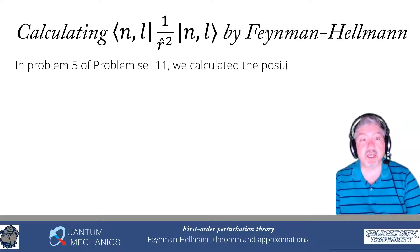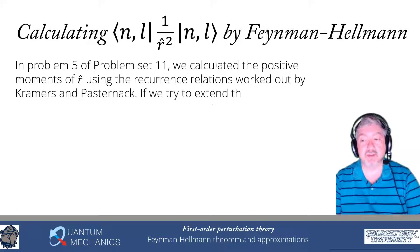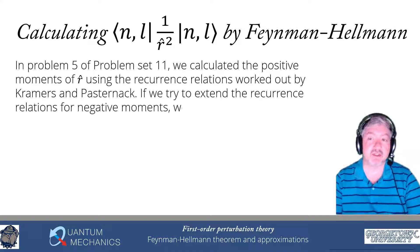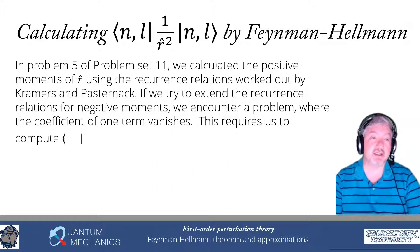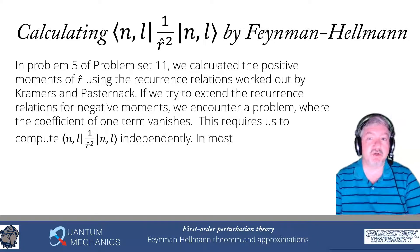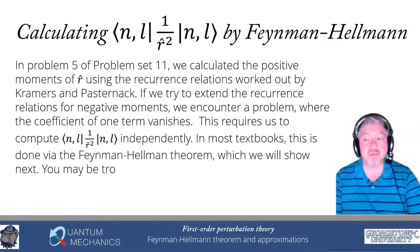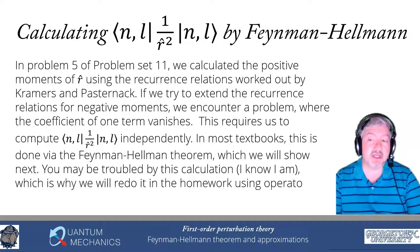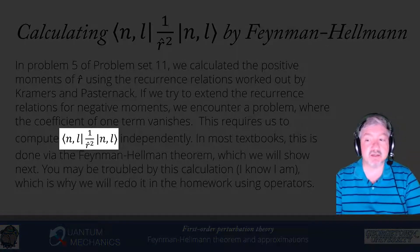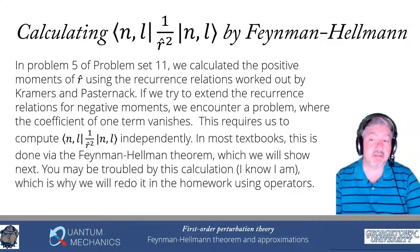A second problem we'll look at with the Feynman-Hellman theorem is calculating the inverse squared moment of the radial position coordinate in the hydrogen wave functions — the NL wave functions. In problem 5 of problem set 11, we calculate the positive moments of R-hat using a recurrence relation worked out by Kramers and Pasternack. If we try to extend the recurrence relation for negative moments, one of the coefficients vanishes, stopping the recurrence. The only way to restart it requires computing this inverse second moment of the radial position in the hydrogen energy eigenstates. In most textbooks, this is done via the Feynman-Hellman theorem.